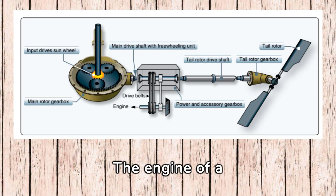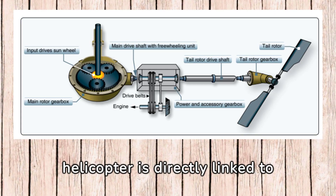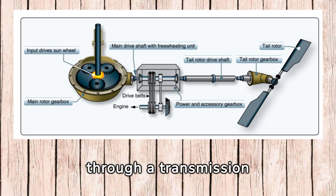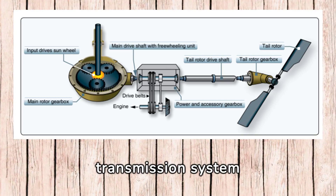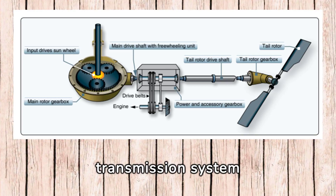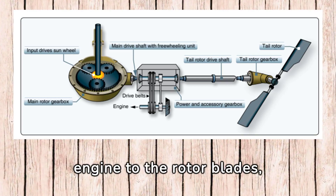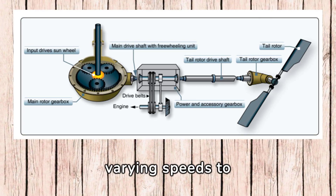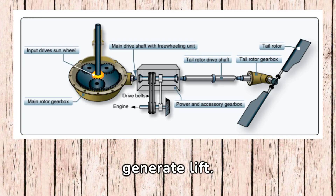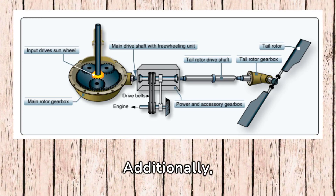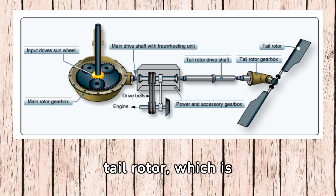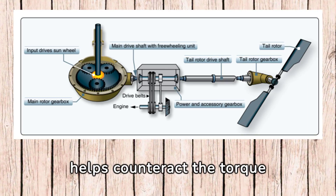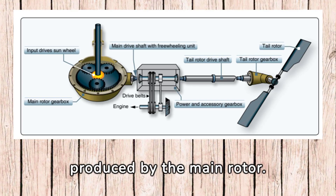The engine of a helicopter is directly linked to the main rotor system through a transmission system. This transmission system transfers power from the engine to the rotor blades, allowing them to rotate at varying speeds to generate lift. Additionally, some helicopters feature a tail rotor, which is also linked to the engine and helps counteract the torque produced by the main rotor.